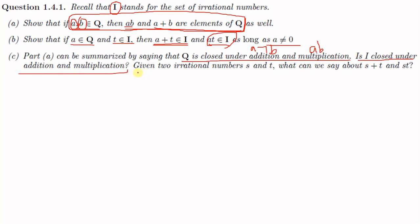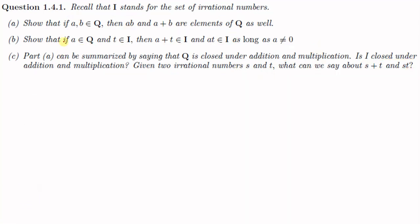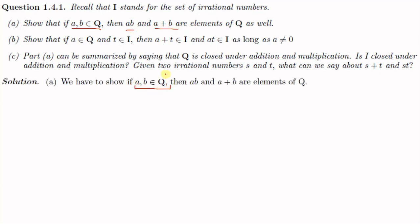Given two irrational numbers s and t, what can we say about s plus t and st? We need to check whether s plus t is irrational or rational, and similarly whether st is irrational or rational. We will prove these one by one. First: if a and b are elements of Q, we have to show that ab and a plus b are elements of Q. So let a and b be elements of Q. The set of rational numbers Q is defined as Q = {p/q : p, q ∈ ℤ, q ≠ 0}.